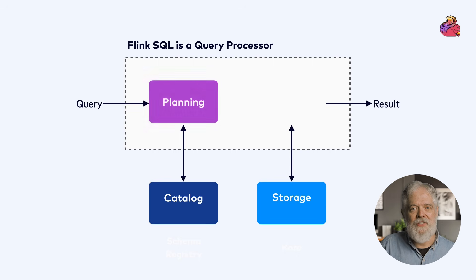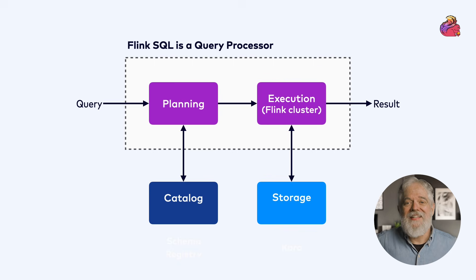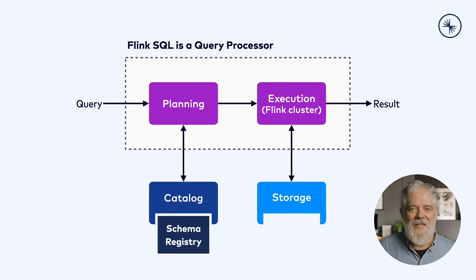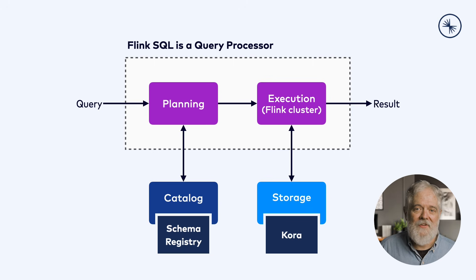So, is Flink SQL a database? Well, no, but it is a query processor. The Flink SQL query planner compiles a query into a Flink job, and that job is executed in a Flink cluster. The details of how Flink executes SQL queries and how this scales are quite interesting, and I'll get into this in an upcoming video. In Flink, the catalog and storage layers are pluggable. In Confluent Cloud, the schema registry acts as the Flink catalog, and Kora supplies the storage layer. Kora is Confluent's cloud-native Kafka storage engine.